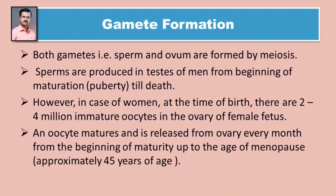However, in the case of women, at the time of birth there are two to four million immature oocytes in the ovary of the female fetus. Stri baalakachya janmaaveli tyanchya andashayat do te chaar dashalaksha ithakya motha sankhyet apakva andapeshya astat. An oocyte matures and is released from the ovary every month from the beginning of maturity up to the age of menopause, approximately 45 years. Manje strichya andashayat yovaanaavasthepasun pudhey rajo nivruttichya vayapaaryant - saadharanata 45 vayapaaryant - dor maha eka andpeshiche paripakvan hovaun tiche andamocan hote.